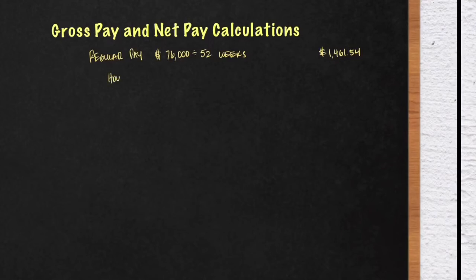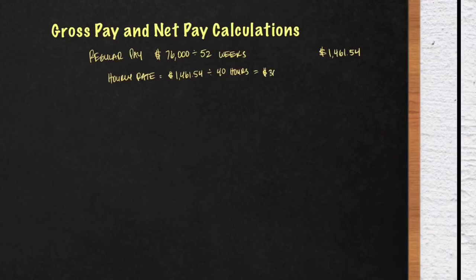Next, let's calculate his hourly rate. This is important because we need to calculate his overtime pay next. His hourly rate is $1,461.54 divided by 40 hours — that's the regular amount of hours in a week. That will give you $36.54 per hour.